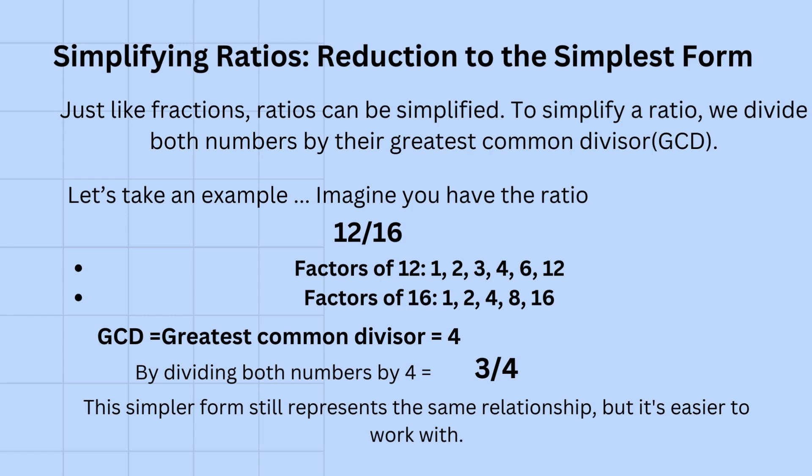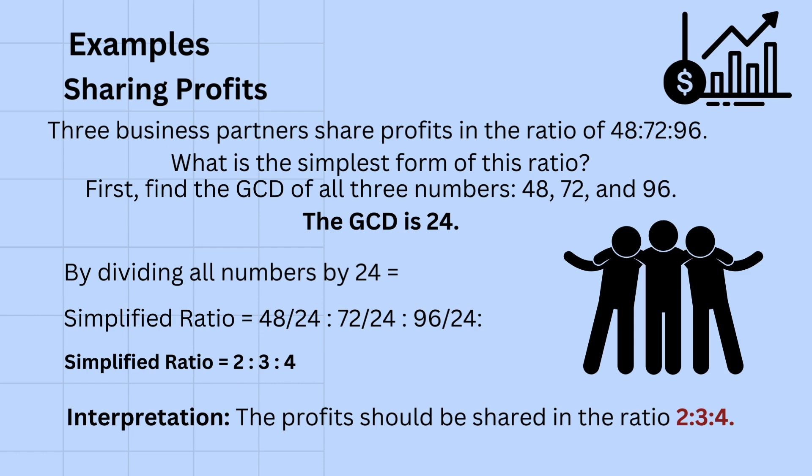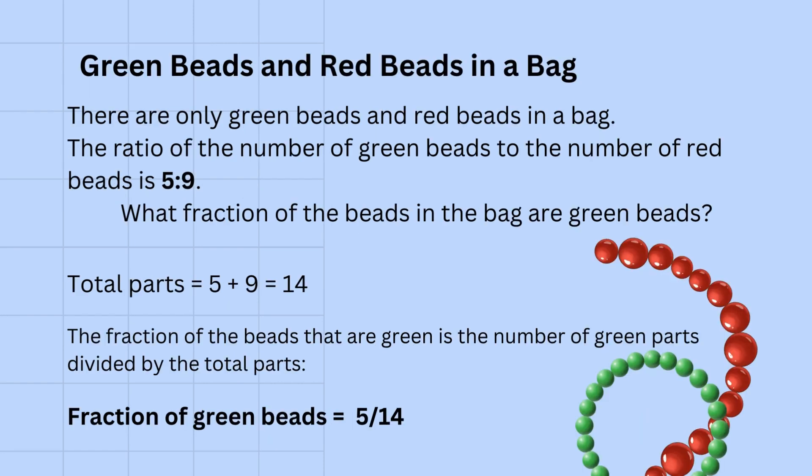We can see that ratios are often used in sharing profits. Here we can see how to calculate the fraction from a given ratio. To find out what fraction of the beads are green, we need to calculate the total number of parts. This total number of parts is calculated by adding the parts of the ratio together.